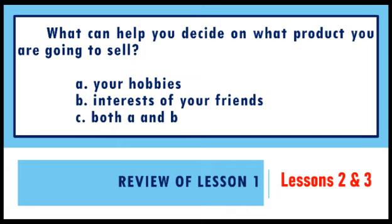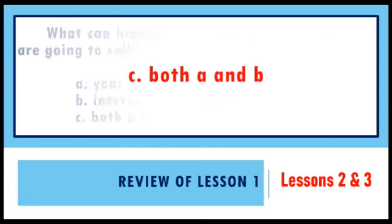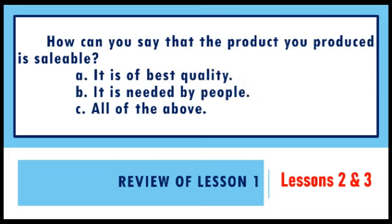Question 2: What can help you decide on what product you are going to sell? A. Your hobbies. B. Interests of your friends. C. Both A and B. What is your answer? If your answer is letter C, good job. You are correct.